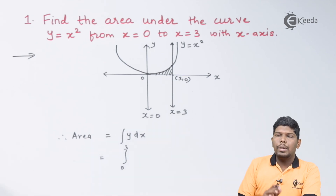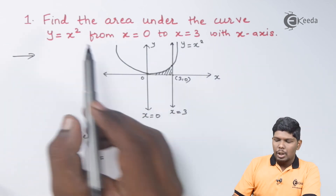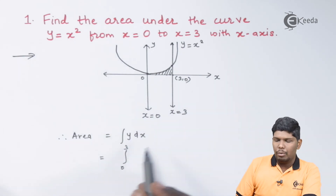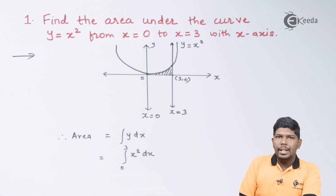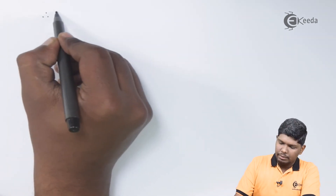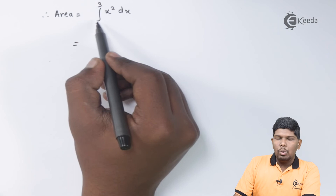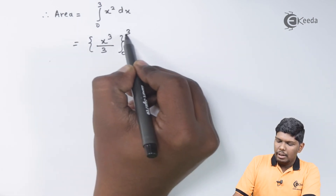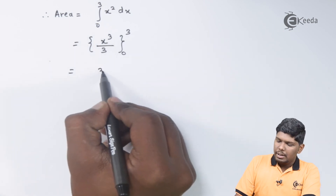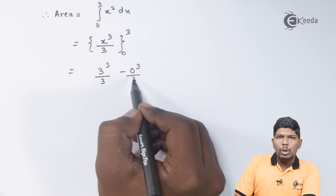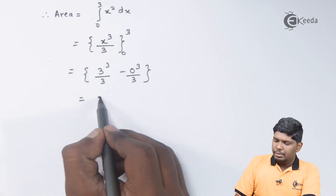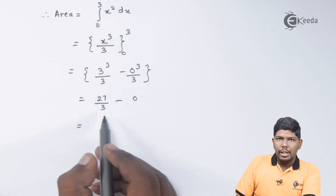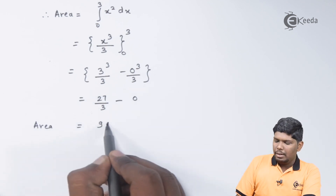The value of y is found from the equation of the curve. Since the area is below the curve y = x², we substitute y = x². So area = integral from 0 to 3 of x² dx. The integral of x² is x³/3, evaluated from 0 to 3. Substituting: (3³/3) − (0³/3) = 27/3 − 0 = 9. So the area of the region is 9 square units.